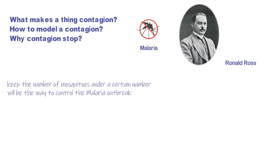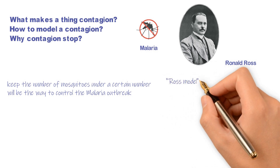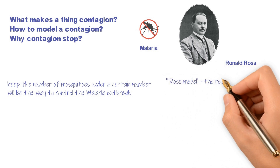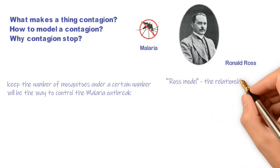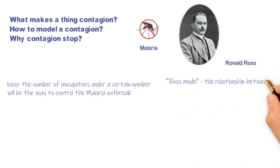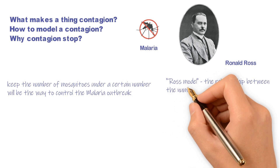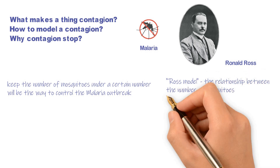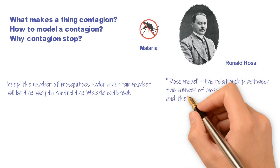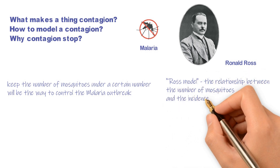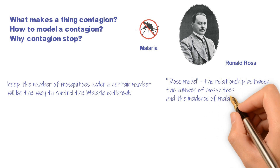So he used another method to prove his theory, which is the mathematical model. He developed a simple model, now known as the classical Ross model, which explained the relationship between the number of mosquitoes and the incidence of malaria in humans.